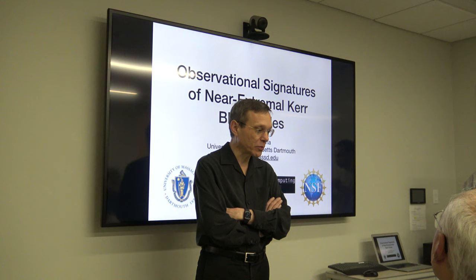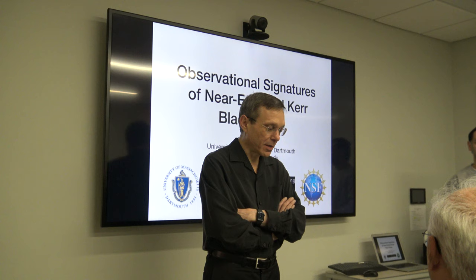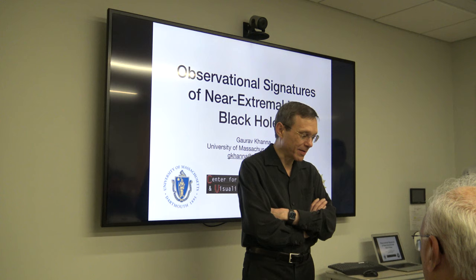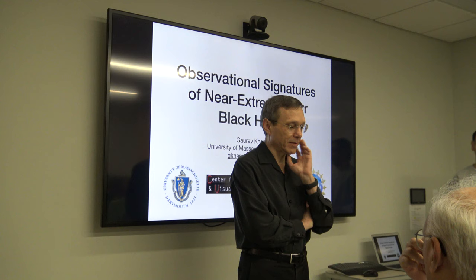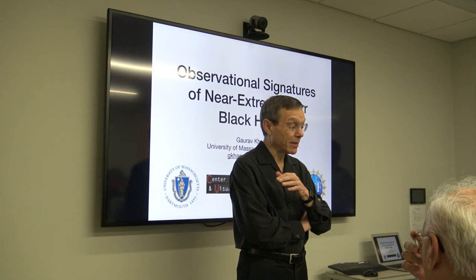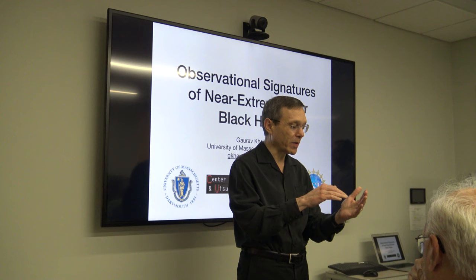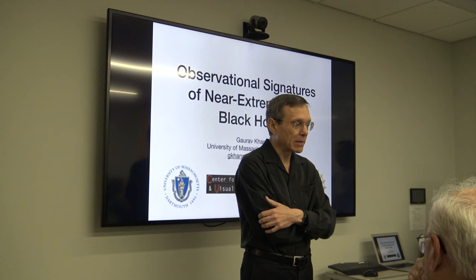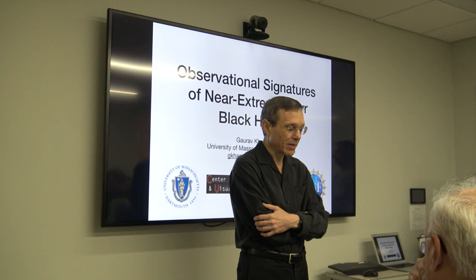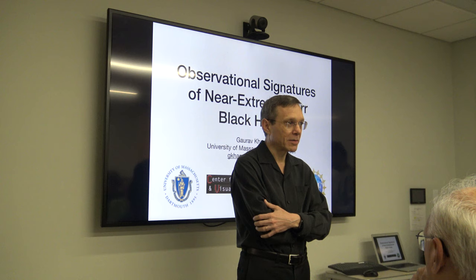So today we have three presentations. I just wanted to mention the news of the week about black holes. There was a paper on the archive that an intermediate mass black hole - a black hole with a mass of the order of 10,000 solar masses - may exist near the galactic center, near Sagittarius A star. And this is the fifth candidate in that vicinity.